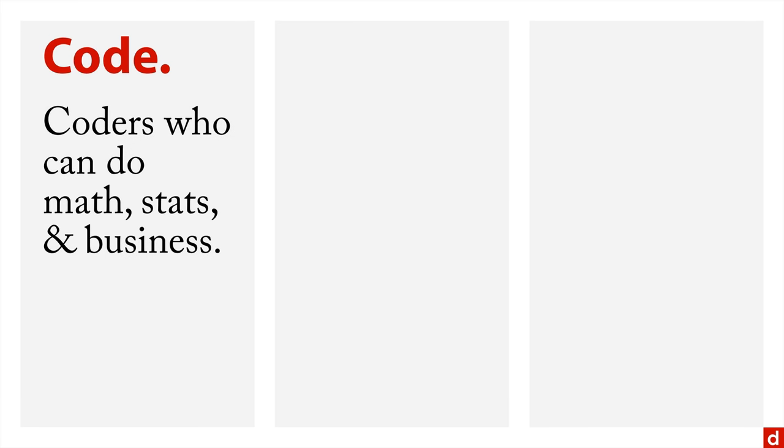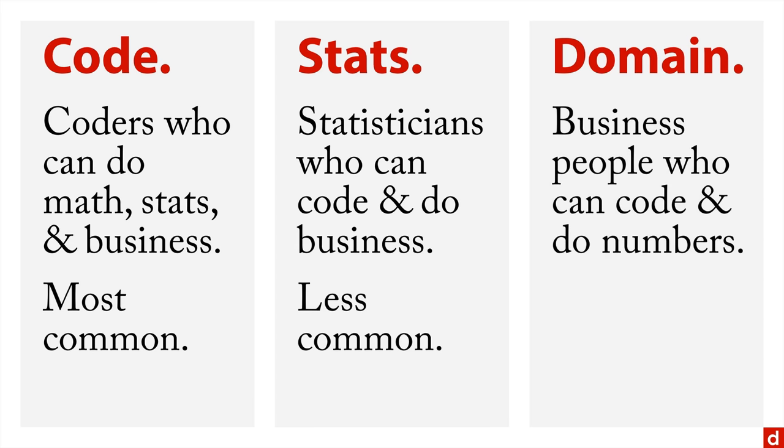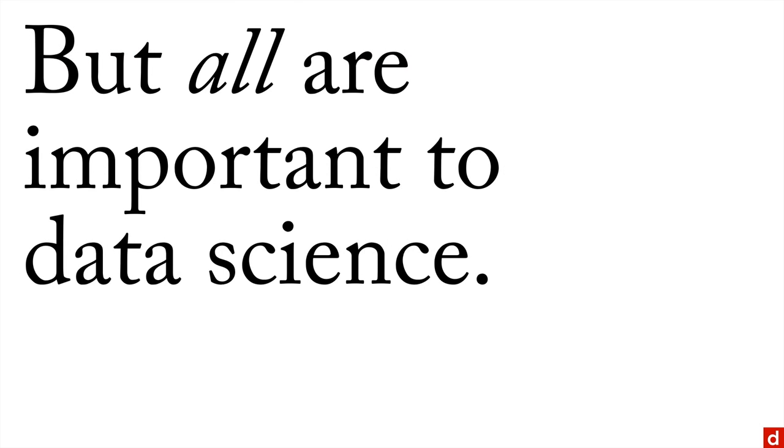So let's think about a couple of backgrounds where people come from here. First is coding. You can have people who are coders who can do math, stats and business. So you get the three things. And this is probably the most common. Most of the people come from a programming background. On the other hand, there's also stats or statistics. And you can get statisticians who can code and who also can do business. That's less common, but it does happen. And finally, there's people who come into data science from a particular domain. These are, for instance, business people who can code and do numbers. And they're the least common, but all of these are important to data science.